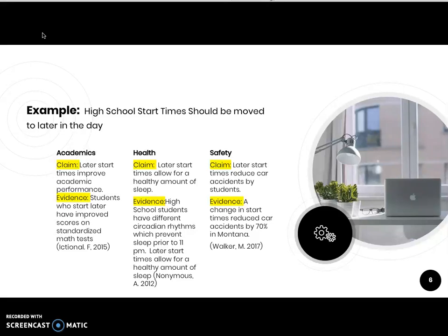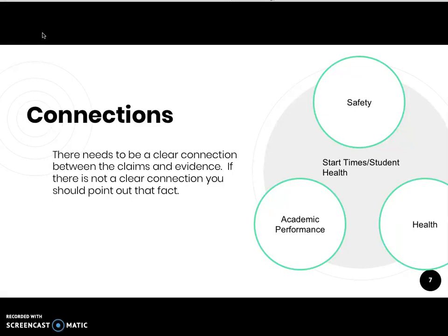Looking at all three of these claims, I have identified multiple separate claims — three very distinct claims dealing with academics, health, and safety. I've discussed the evidence that supports those claims. But I also have to find the connections. Even though we didn't clearly discuss specific ways the evidence was connected, they are all related to the relationship between start times and student well-being. Being able to point out that obvious connection would indicate that I understood the line of reasoning and was capable of evaluating it. It's actually a higher-order thinking skill to identify flaws rather than assume everything is well-constructed just because it's been published.